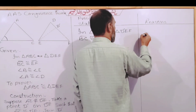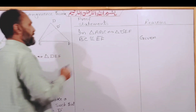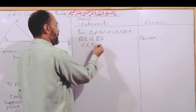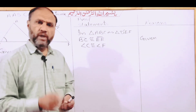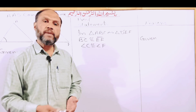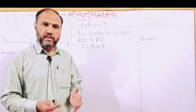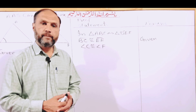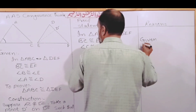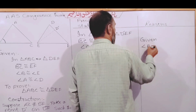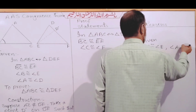Also from the given, angle C and angle F are congruent. Now remember: a triangle has three angles, and the sum of all three angles equals 180 degrees. If two angles of both triangles are already congruent, then by the third-angle theorem the third angles must also be congruent. For example, angle B is congruent to angle E, and angle A is congruent to angle D.